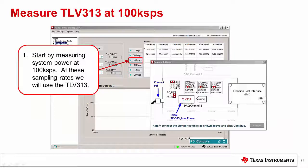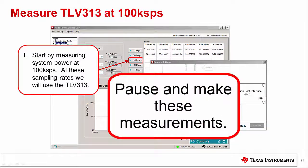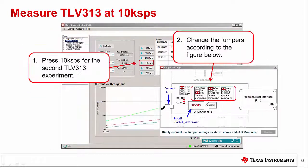Now let's change the amplifier and measure power for 100 kS/s. Press the 100 kS/s button to begin. This will bring up a window that shows how to set the jumpers and indicates that you need to install the TLV313 low power coupon board. Make these changes to the hardware and press Continue. Pause and make these measurements. Let's continue measuring the TLV313 at 10 kS/s. Press the 10 kS/s button. This will bring up a window showing how to set the jumpers. Now the amplifier jumper is in the high position, but the ADC analog and digital current jumpers are in the low position. Make these changes in the hardware and press Continue. Pause and make these measurements.